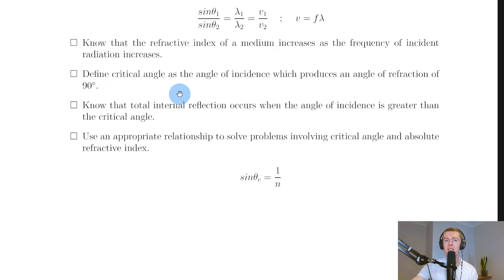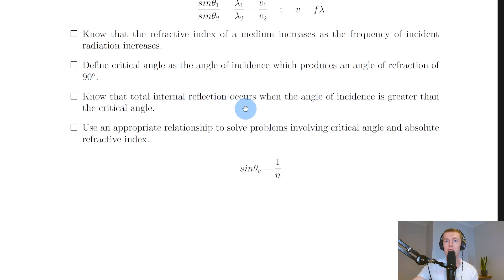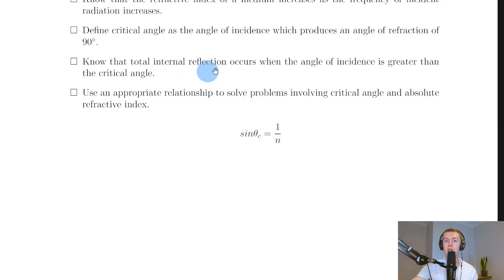The critical angle is defined as the angle of incidence which produces an angle of refraction of 90 degrees. Total internal reflection occurs when the angle of incidence is greater than the critical angle. If you increase the angle of incidence to the critical angle, light refracts at 90°; increase it further and the light is totally internally reflected and won't leave the block.